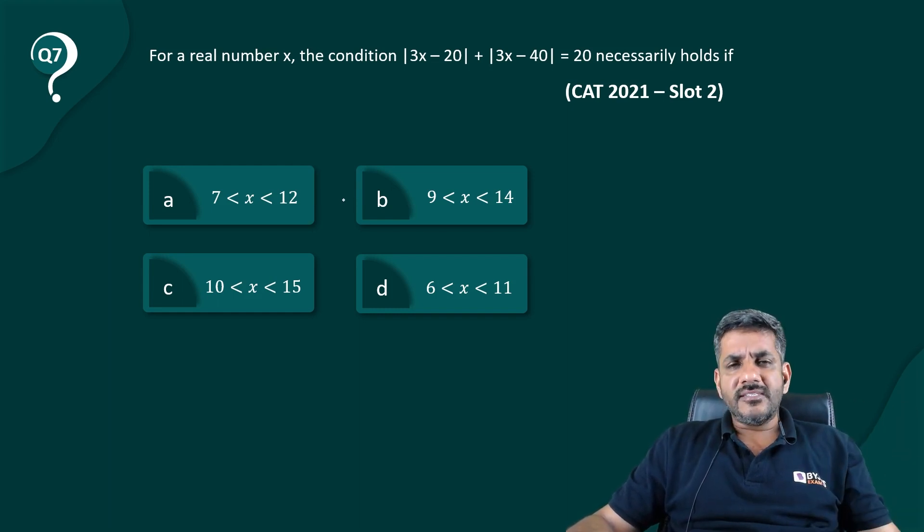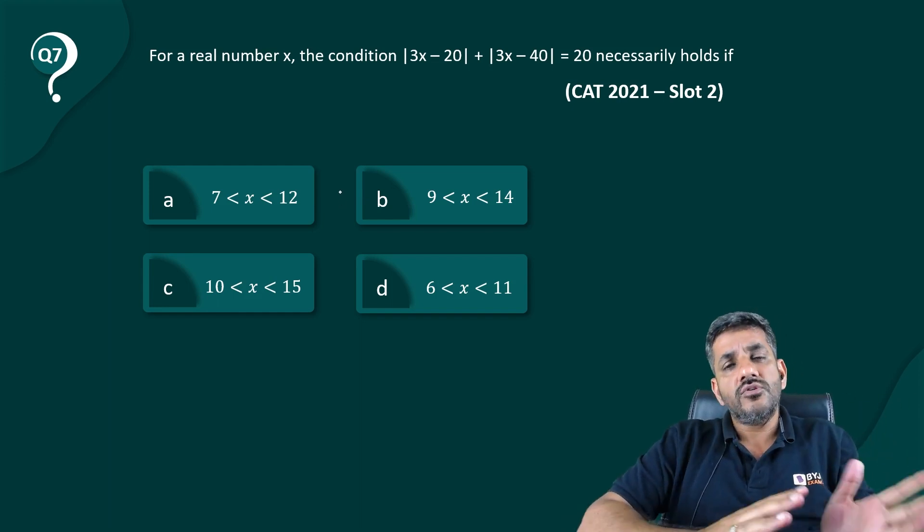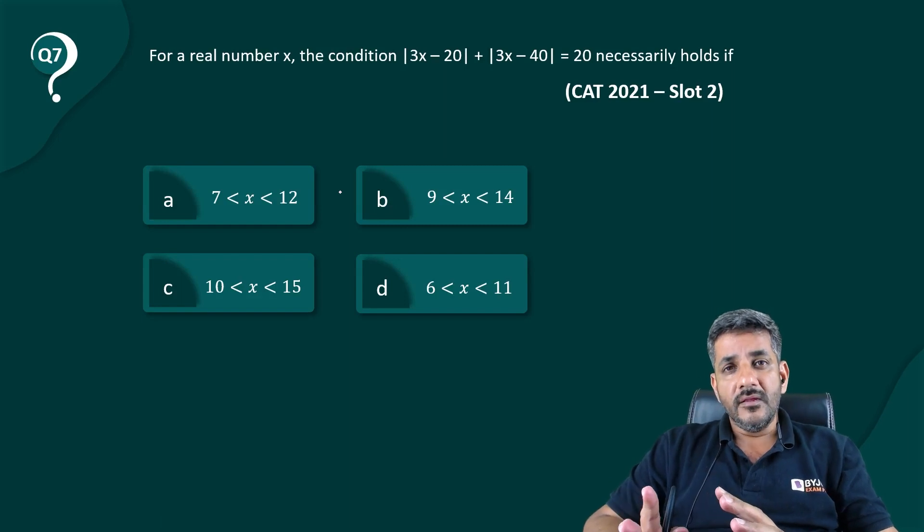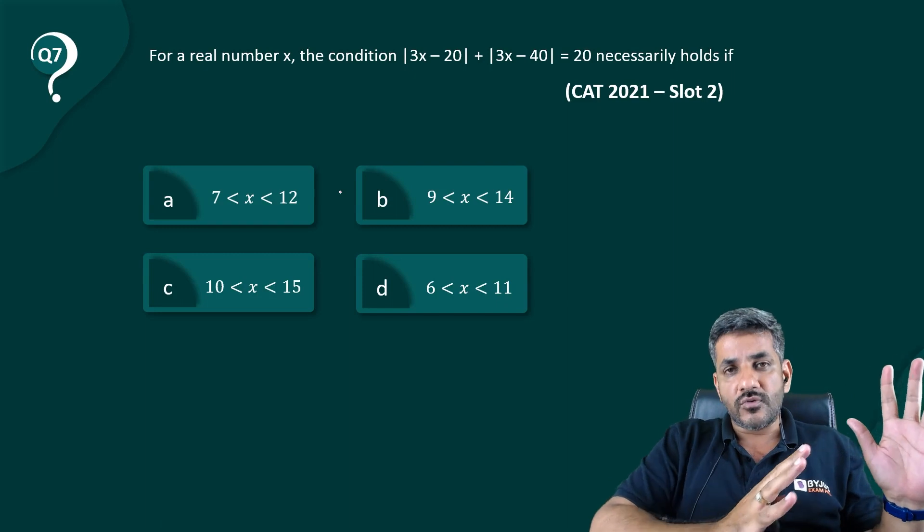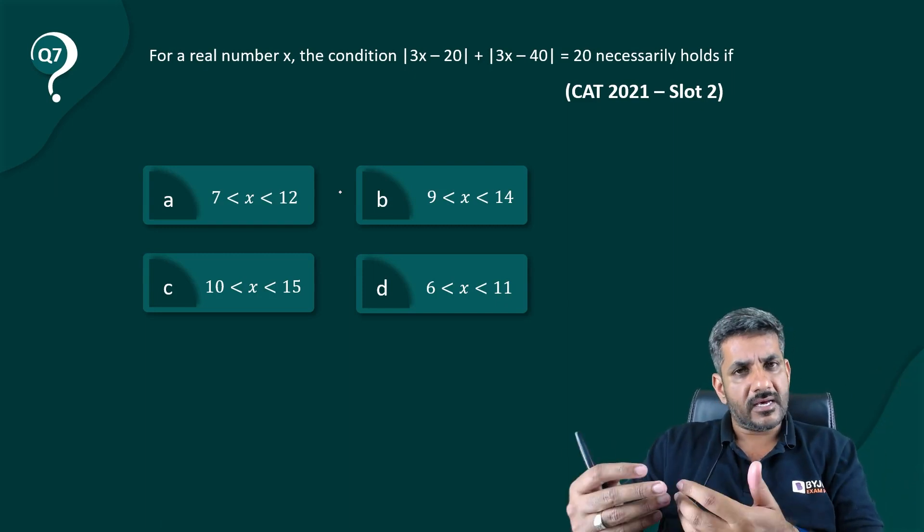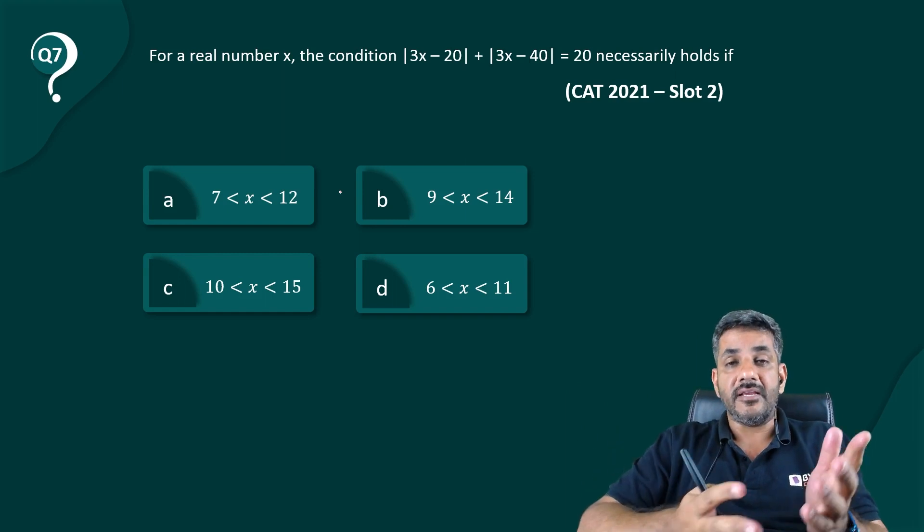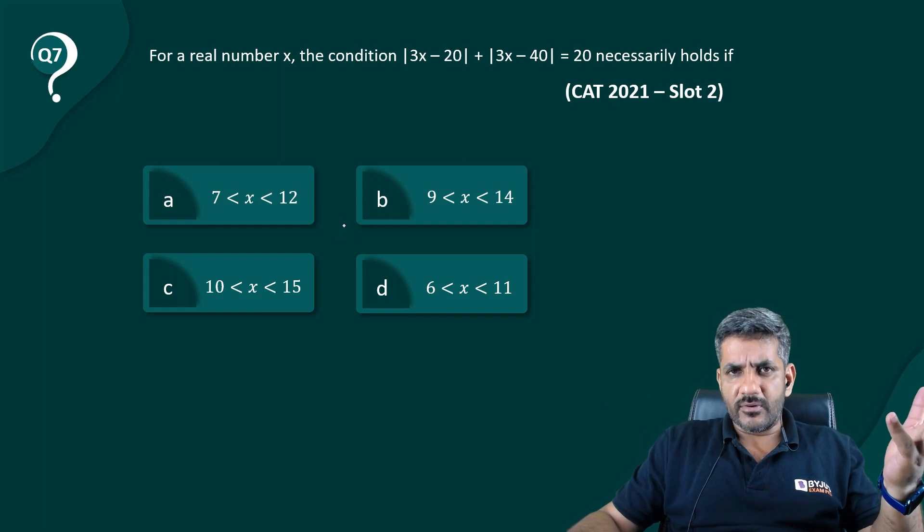What do we do in these cases? We try to find out a number which is there in two of the ranges and not in the other two. By that logic we will be able to eliminate two of them if it satisfies. The two ranges in which it is not there are eliminated. If it does not satisfy, the two ranges in which it is there are eliminated. So I'm trying to find out a number.